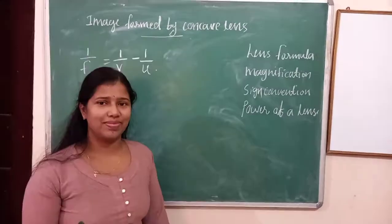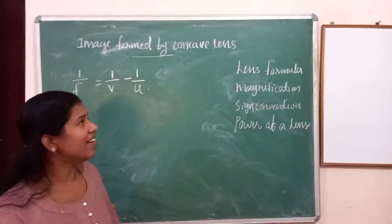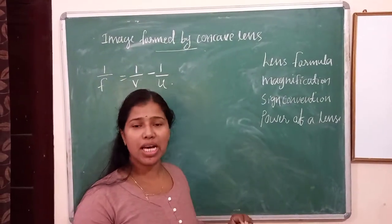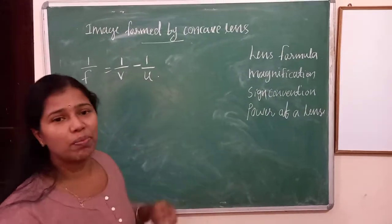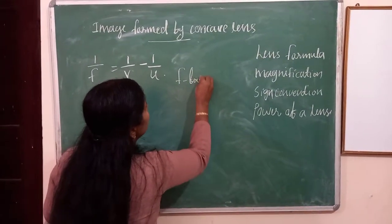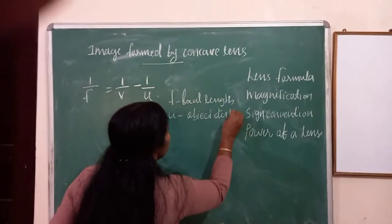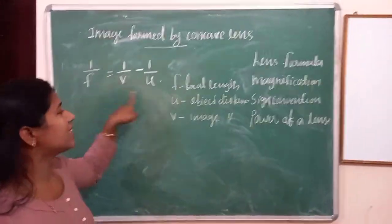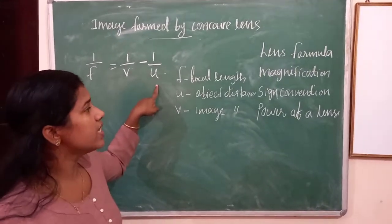Next is the lens formula. The lens formula — we have already discussed the mirror formula. 1 by f is equal to 1 by v minus 1 by u. This is very very important. In the board exam, one question will come from this — maybe a numerical, or a diagram related to this formula. So 1 by f is equal to 1 by v minus 1 by u. This is the lens formula. Derivation is not required, only this equation you have to study.